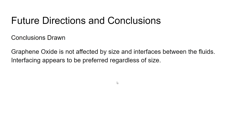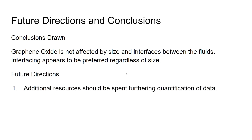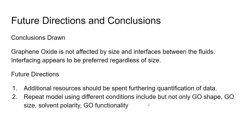One of the conclusions we drew was that graphene oxide does not appear to be affected by size when interfacing between the fluids — interfacing appears to be preferred regardless of size. Future directions include allocating additional resources to further quantify the data, repeating experiments using different conditions including graphene oxide shape, graphene oxide size, solvent polarity, and graphene oxide functionality, and continuing the literature search to find further directions for our project.